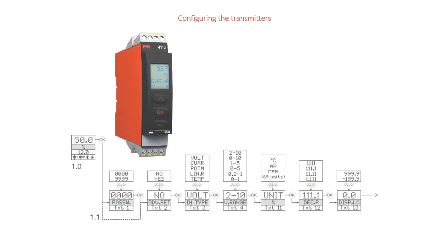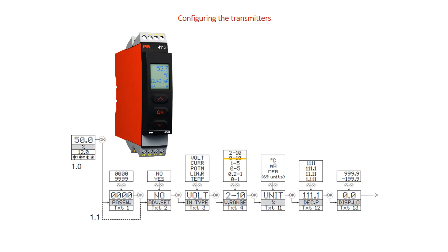This animation clearly shows how to navigate. Every time you press the OK button, the interface advances to the next menu. Press one of the arrow buttons to make a selection, then press OK to advance. After configuring the last menu, press OK and the word 'wait' appears. The interface downloads your configuration into the module and then returns to operational mode.